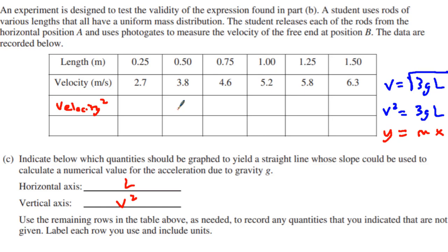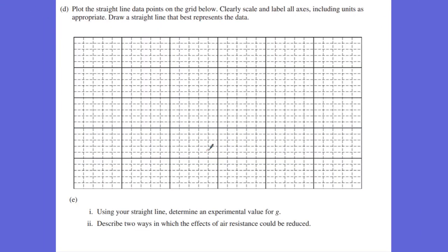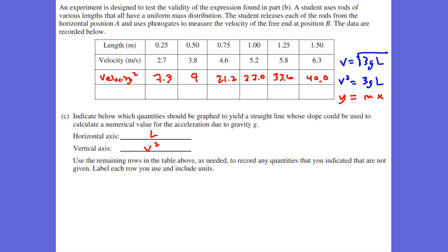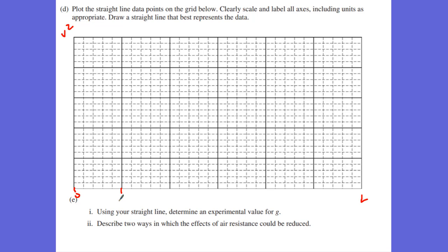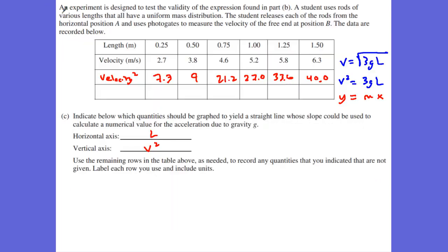Each and every value. And so you can see I'm going to take 2.7 squared. I'm going to get 7.3. I'm going to get 3.8 squared. I'm going to get 9. 4.6 squared is 21.2. 5.2 squared is 27.0. 5.8 squared is 33.6. And 6.3 squared is looks like about 40.0. So now I'm ready to graph. You can see my horizontal axis is going to get my length. So I'm going to put all my lengths on my horizontal axis. I'm going to put my velocity squared on my Y axis. As I take a look, my lengths, we're going to go from anywhere from 0.25 all the way to 1.5. So I'm going to go 0.25, 0.5, 0.75, 1, 1.25, 1.5. And that works perfectly.